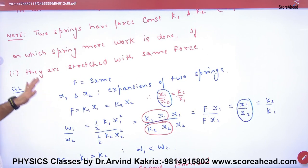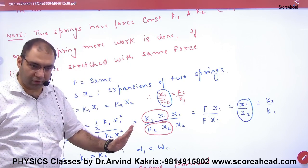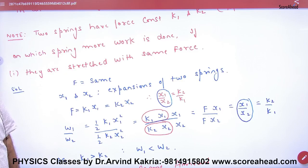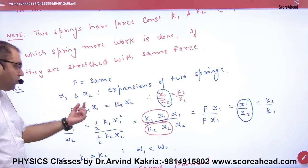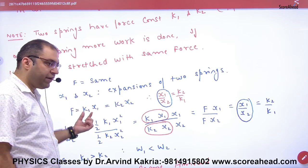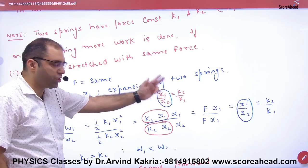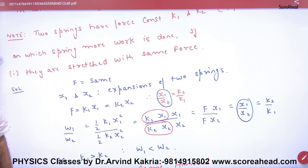In the first case, when they are stretched with the same force, this means force is the same in both, but the expansion is not the same. One is hard and one is soft, so X1 and X2 differ. Now, force is the same, so K1X1 equals K2X2. Equate to find the ratio of X1 and X2.